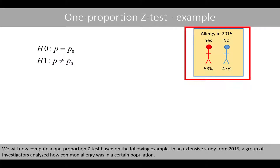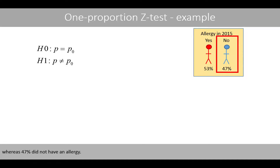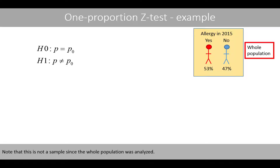We will now compute the one-proportion Z-test based on the following example. In an extensive study from 2015, a group of investigators analyzed how common allergy was in a certain population. The study, which covered the complete population, found that 53% had some sort of allergy, whereas 47% did not. Note that this is not a sample since the whole population was analyzed.